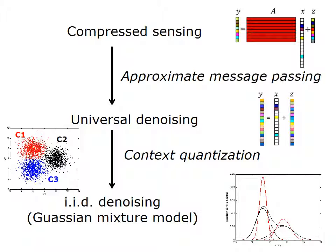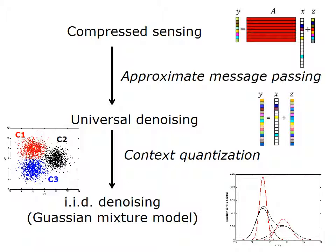We can now summarize the talk. The main idea is that the complicated linear inverse problem, or compressed sensing problem, has been converted to a universal denoising procedure using the approximate message passing framework. Universal denoising involves clustering, or context quantization, which maps a complicated non-IID denoising problem into an IID denoising problem, which is solved with a Gaussian mixture model fitting procedure. Finally, we provide links to our research websites, some papers related to this work, and acknowledgments. Thank you for your attention.